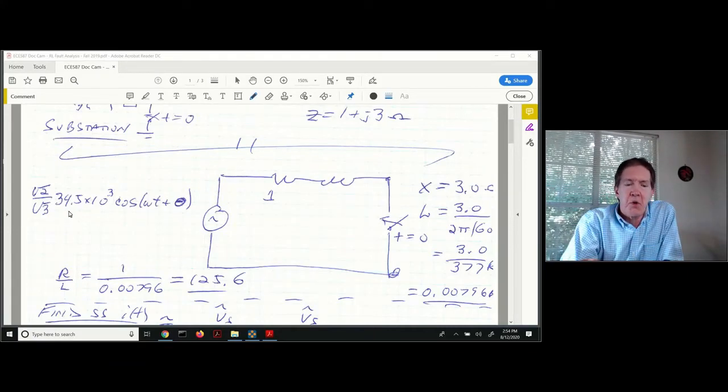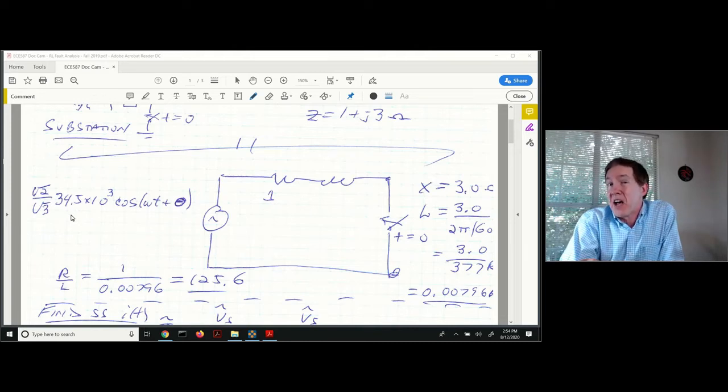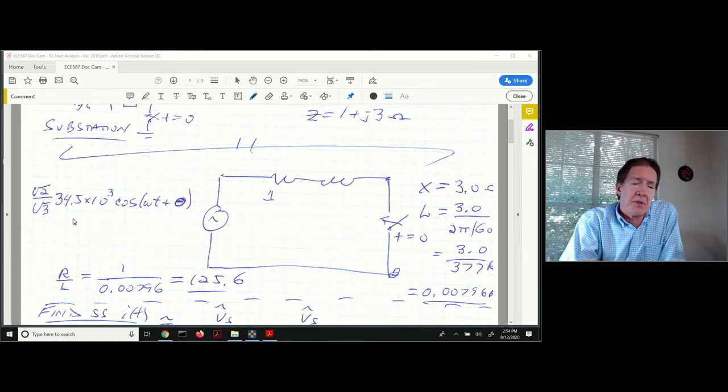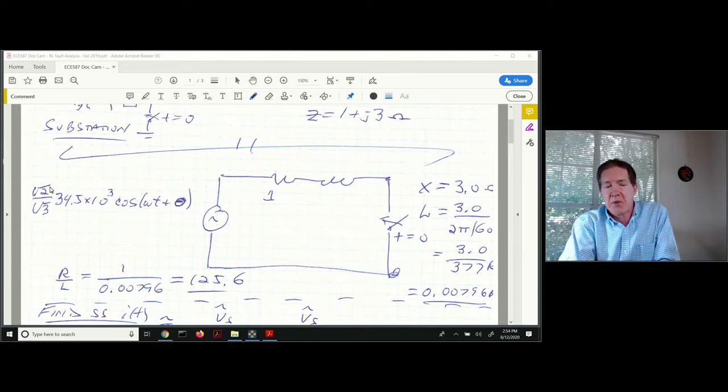If I've got 34.5 kV, that is a line-to-line value. Since this is a line-to-neutral type circuit, you divide that by square root of 3 to get the line-to-neutral value. Since this is an RMS value, you need to multiply by square root of 2 to get the zero-to-peak.